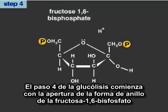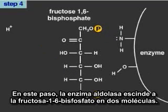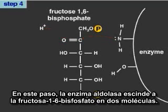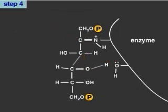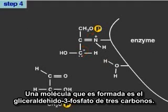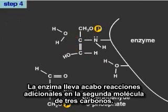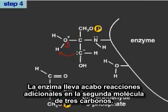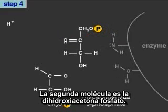Step 4 of glycolysis begins with the opening of the ring form of fructose 1,6-bisphosphate into its open chain form. In this step, the enzyme aldolase cleaves fructose 1,6-bisphosphate into two molecules: the 3-carbon glyceraldehyde 3-phosphate, and the second 3-carbon molecule dihydroxyacetone phosphate.